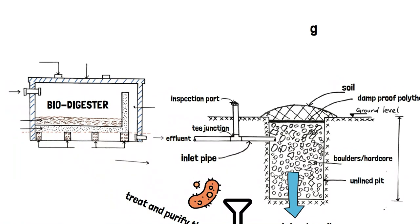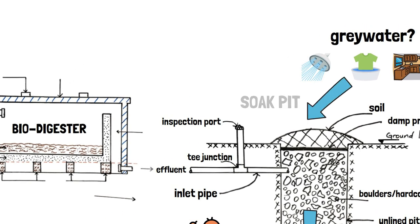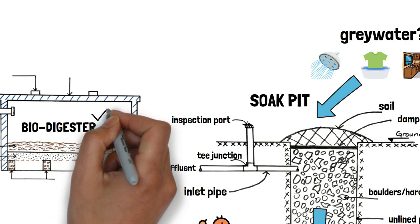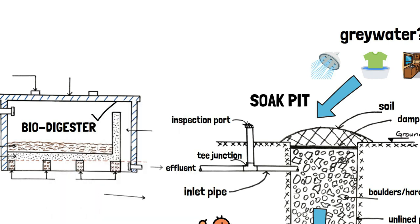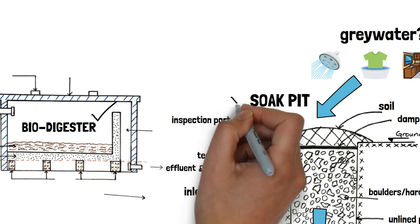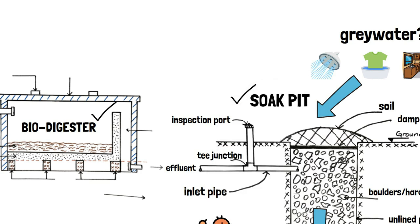Remember the term grey water? It's the wastewater that comes from shower areas, laundry and the kitchen. The soak pit is designed to treat grey water generated from your home, while the biodigester chamber is designed to treat black water only. So, a combination of the biodigester chamber and the soak pit ensures that you're able to effectively treat the sewage you generate at your home. I hope you've gotten that idea clearly.